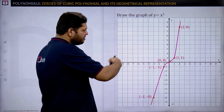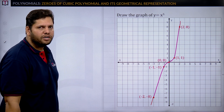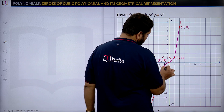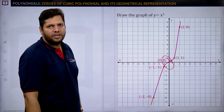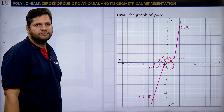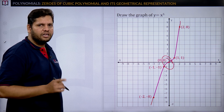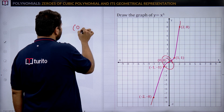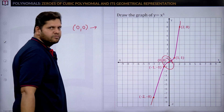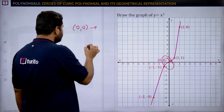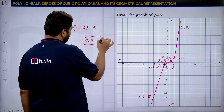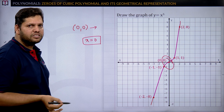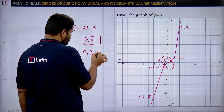Looking at the graph, the curve intersects the x-axis at only one point: (0, 0). So the x-coordinate is 0, meaning there is only one zero. But since it is a cubic polynomial with degree 3, it must have three zeros — and here all three zeros are equal to 0, i.e., repeating zeros: 0, 0, 0.